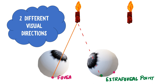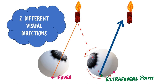In squint, suppose the eyeball is inwardly rotated. The object is now falling on an extra-foveal point — in this picture it is falling on the nasal aspect of the retina. Therefore the image is not localized to the same point as the object, and the image is being localized somewhat temporal to the object. Instead of having one single visual direction — which happens when the object falls on the fovea of both eyes, as the foveas are corresponding points — we get two different visual directions.